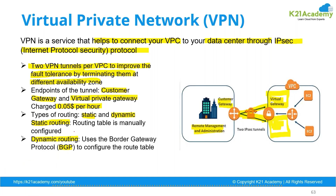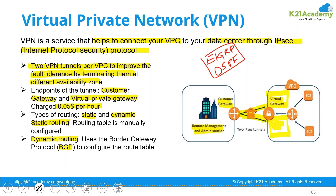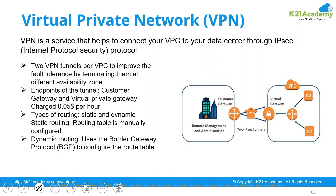For dynamic routing, the protocol supported is BGP — Border Gateway Protocol. There are other dynamic routing protocols like EIGRP and OSPF used for internal communication, but they are not supported here. BGP is the supported dynamic routing protocol on the customer gateway. For static routing, you define: if this is the source and this is the destination, go via this gateway — that is a static route.